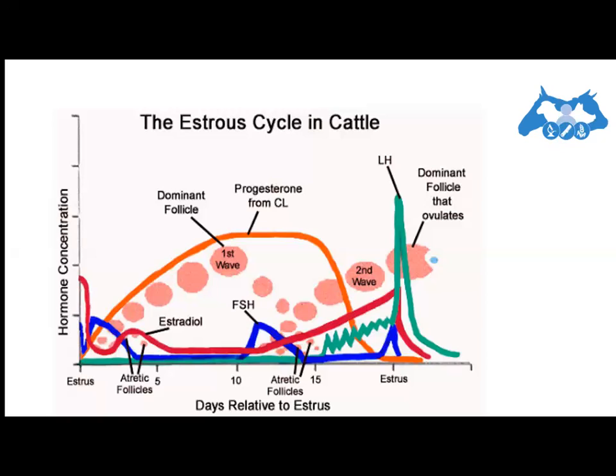The outward signs or symptoms of estrus are somewhat similar among different species of farm mammals, although there are some variations between and within species. Generally, during estrus a cow becomes very restless, does not eat, spends little or no time ruminating, and in some cases calls and searches for the male. She attempts to mount other cows and will stand while they mount her. During estrus she will also stand when the bull mounts and is receptive to mating. The vulva may become enlarged and congested, and mucus secretions may be seen around the tail head or coming from the vulva.